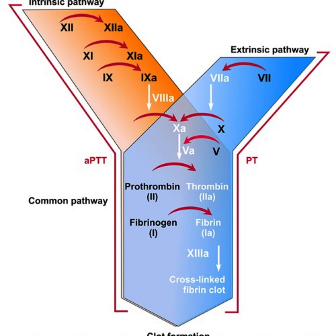The first thing you are going to do is to check whether the sample is cluttered. Check your sample integrity — there is no clot, the sample is well filled, it was not underfilled. Then you start thinking, maybe there is something going on in the intrinsic pathway.